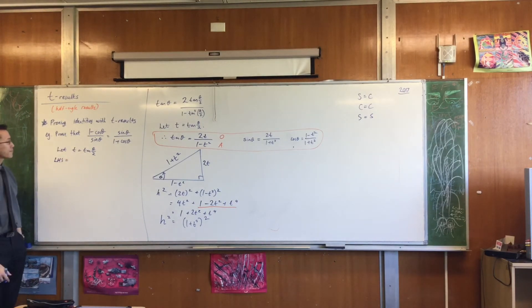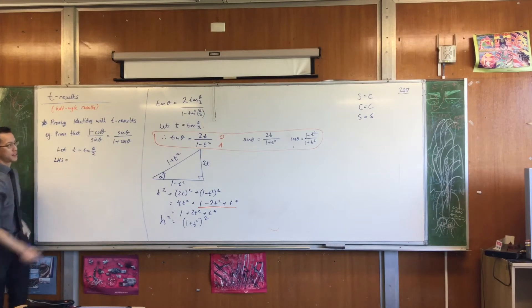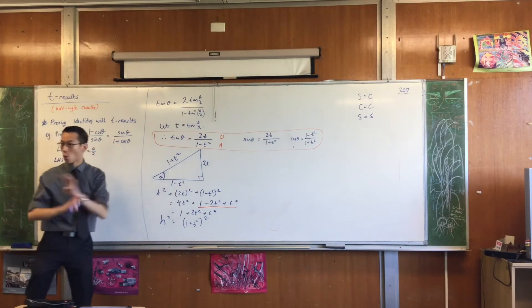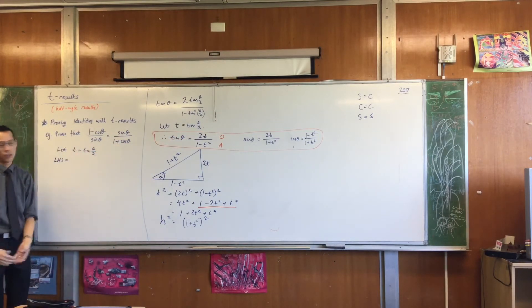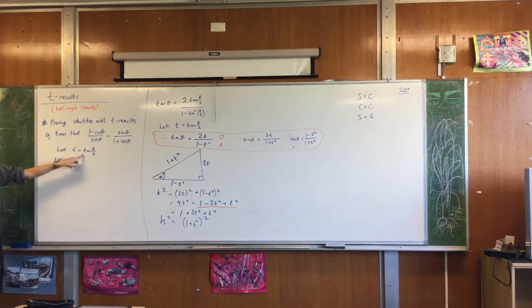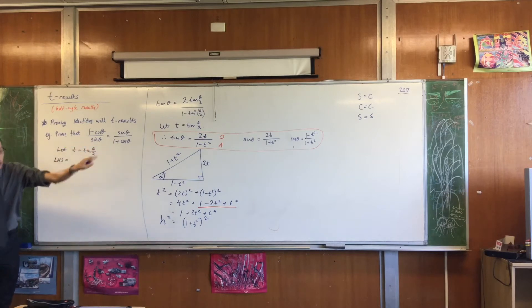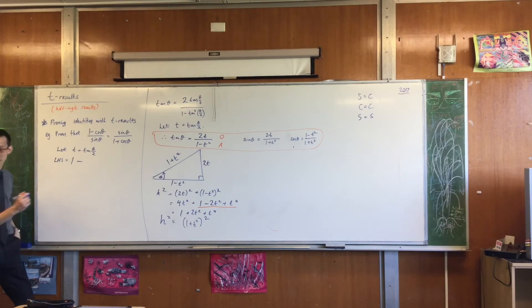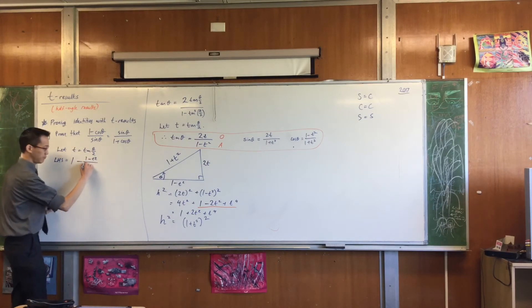Let's start with the left-hand side. If T is equal to this, then all of these things I've written in my box, all of the T results are true. You don't have to restate them all over again. But you might like to have them there on the side. I'm now going to write the left-hand side in those terms. So on the top, I've got 1 minus what? 1 minus T squared on 1 plus T squared.